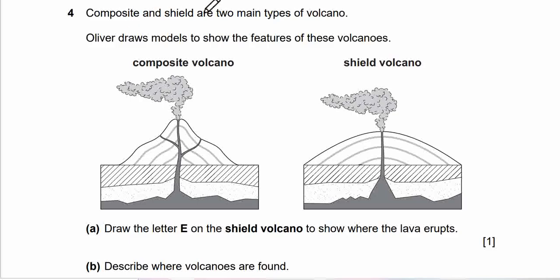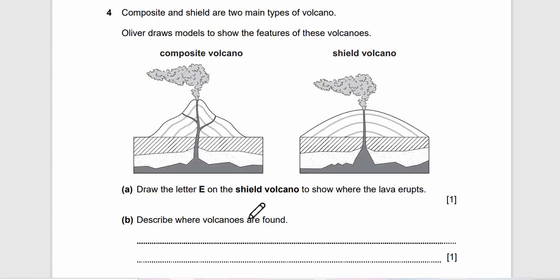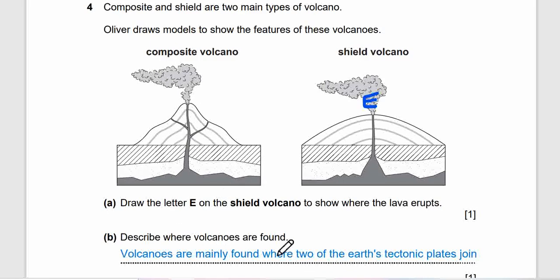Next question. Question 4 says, composite and shield are two main type of volcano. So there are composite volcano and shield volcano. Oliver draws models to show the features of these volcanoes. Question A. Draw the letter E on a shield volcano to show where the lava erupts. Make your answer guys. Let's check out the answers now. This is the letter E where the lava erupts.